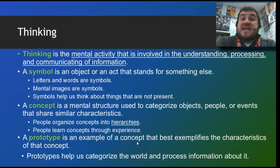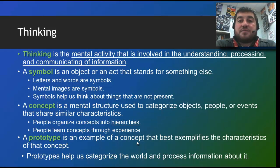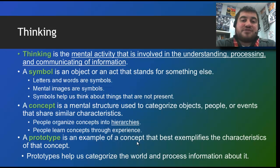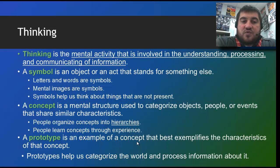Let's come up with our textbook definition of thinking. You all know what thinking is, but it is the mental activity involved in three things: understanding, processing, and communicating information. And there are different characteristics of thinking. A symbol is an object or an act that stands for something else. So, if I said the word 'horse,' you think of a horse — that is a symbol. The word horse and the letters in the word horse are symbols for the word horse.